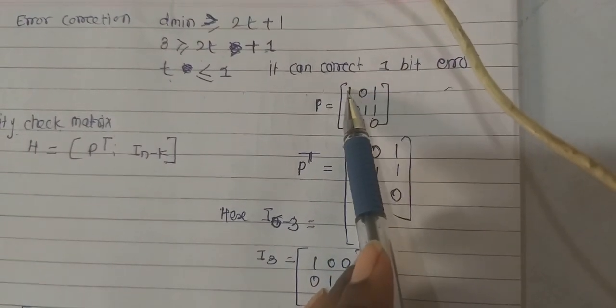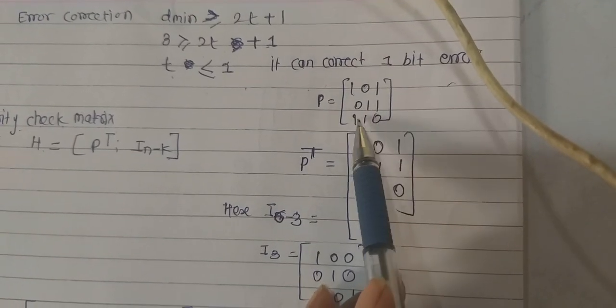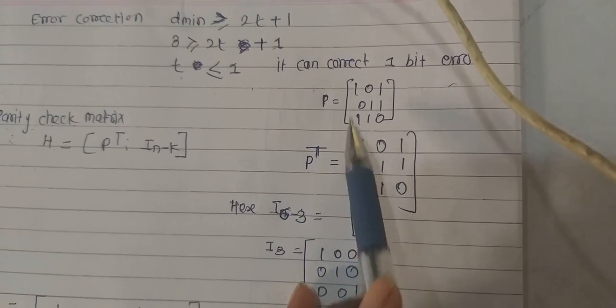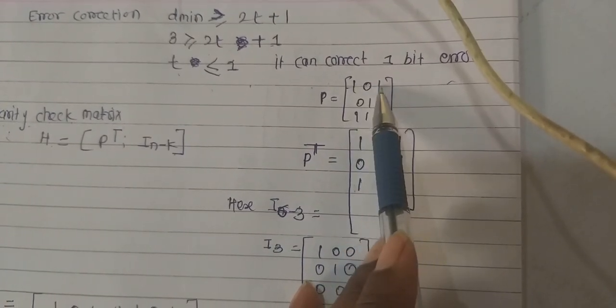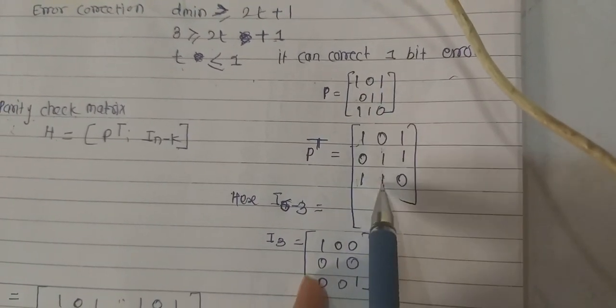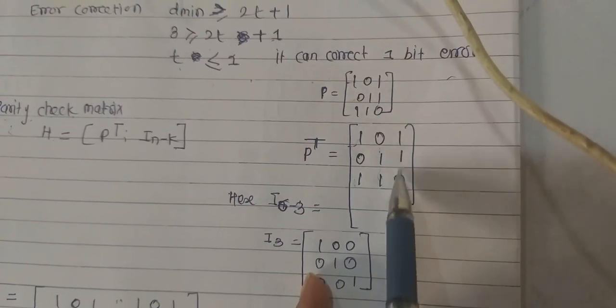P is given already: P = 101, 011, 110. Convert the rows into the respective columns. So 10101 becomes 101 column. Second row becomes second column, third row becomes the third column.